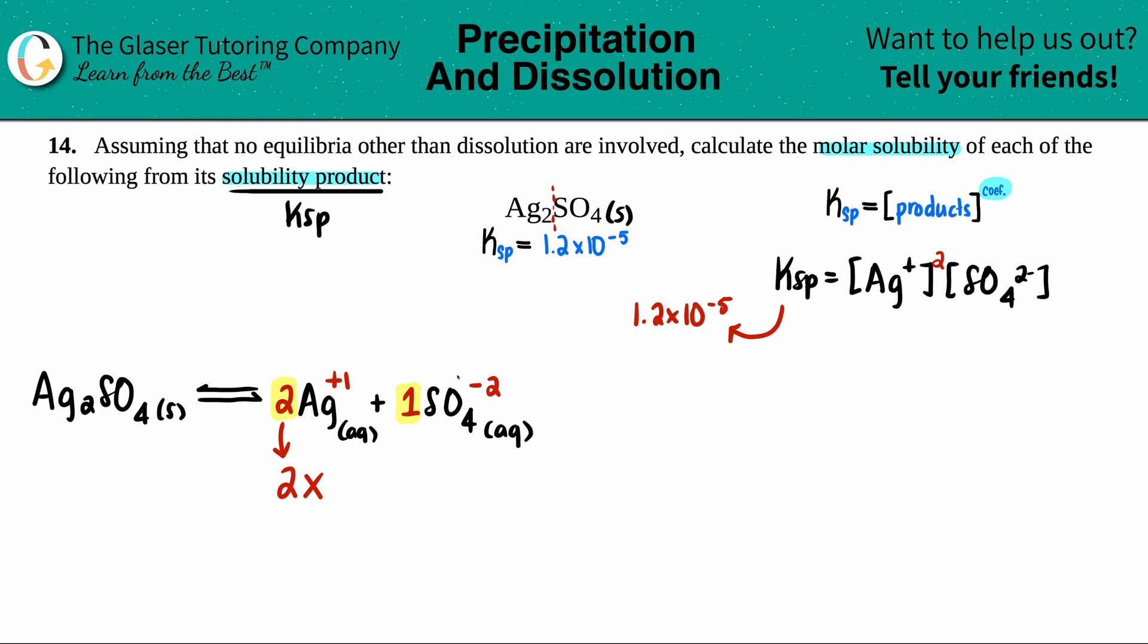And the same thing goes for the SO4 two minus. I'll label it as x, but it just has to match with the coefficient. But one times x is the same as x. So I'll just leave it as x. And now these are the two numbers that go in my equation.